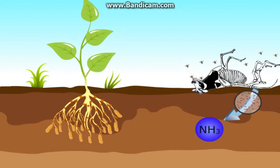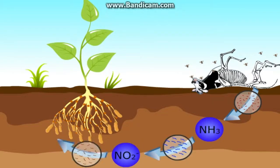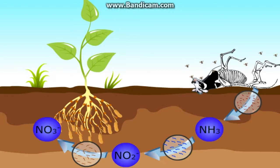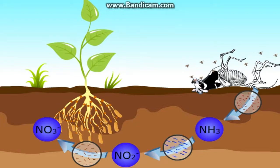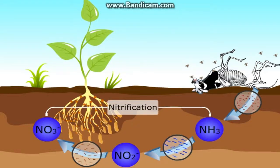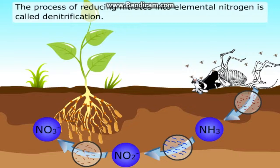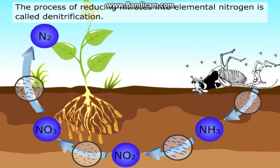Then ammonia is converted into nitrites and nitrates by some other bacteria in the soil. These are again used by the plants. Conversion of ammonia into nitrites and then into nitrates is called nitrification. The process of reducing nitrates into elemental nitrogen is called denitrification.